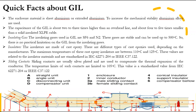The insulators are made of cast epoxy. There are different types of cast epoxies used depending on the manufacturer. The maximum temperatures of these cast epoxy insulators are between 110 and 125 degrees Celsius. These values are standardized in IEC 62271-204 or IEEE C37.122. Sliding contacts are usually silver plated and are used to compensate the thermal expansion of the conductor. The temperature limits of such contacts are limited to 105 degrees Celsius, also standardized in IEC 62271-204 or IEEE C37.122.